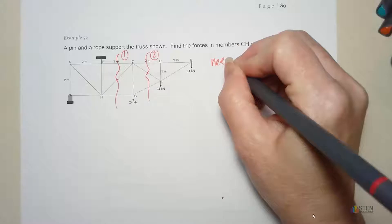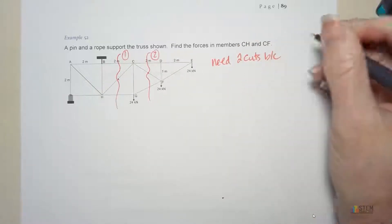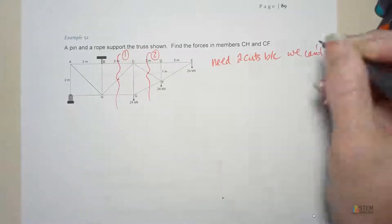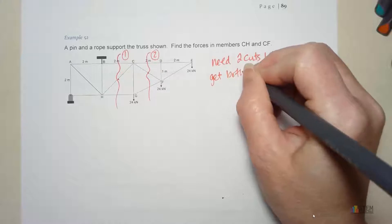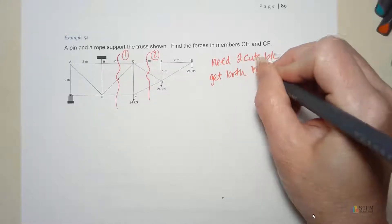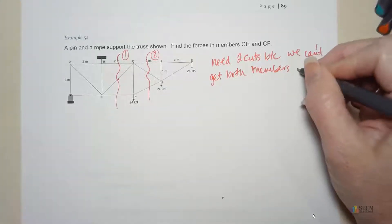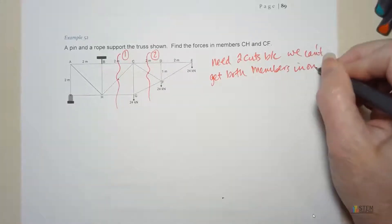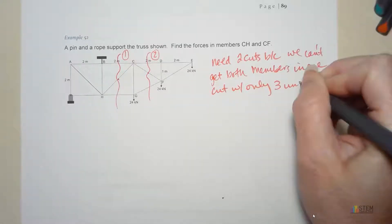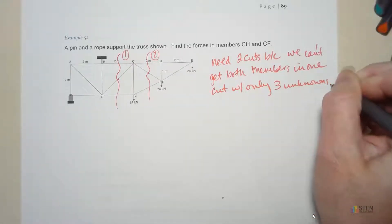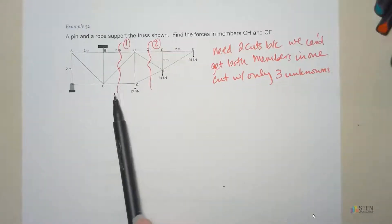We need two cuts because we can't get both members in one cut at the same time with only three unknowns. That's why we're doing two. So let's go ahead and let's start with this one first.